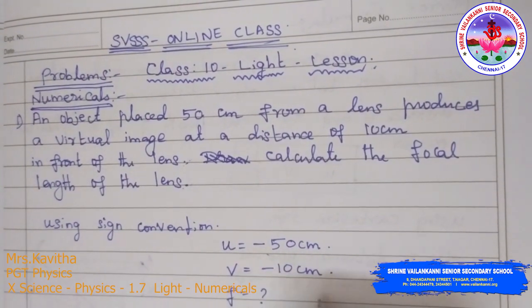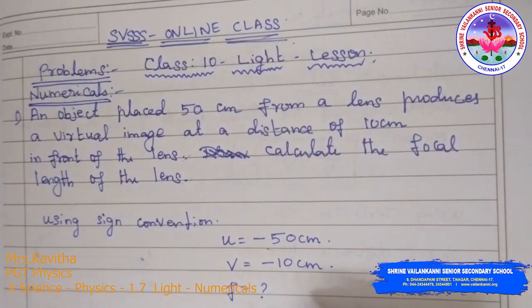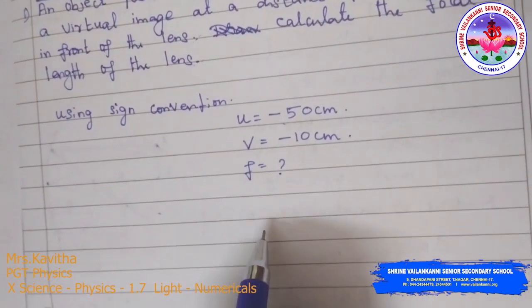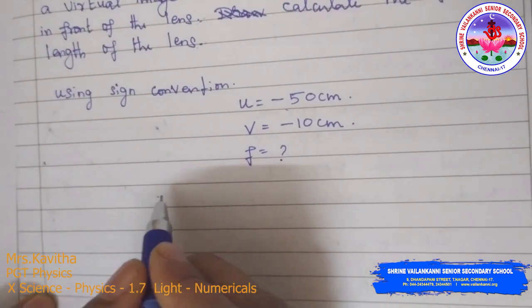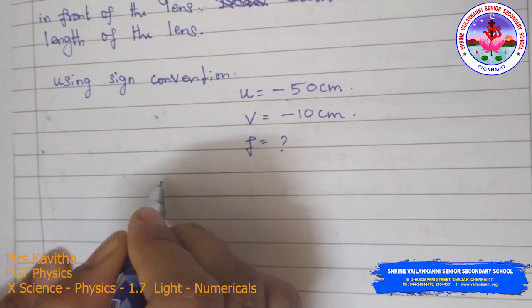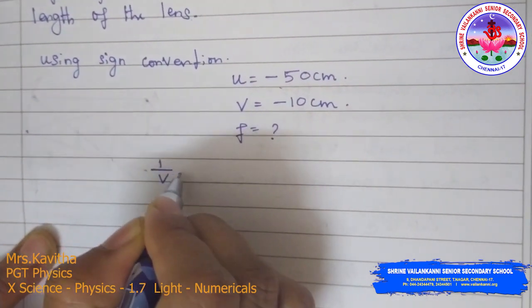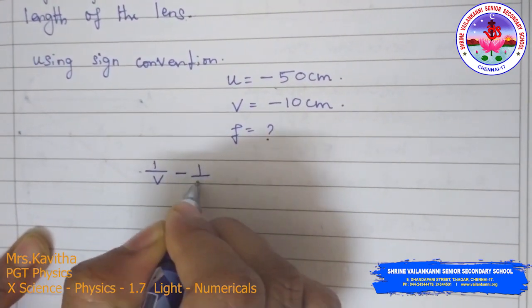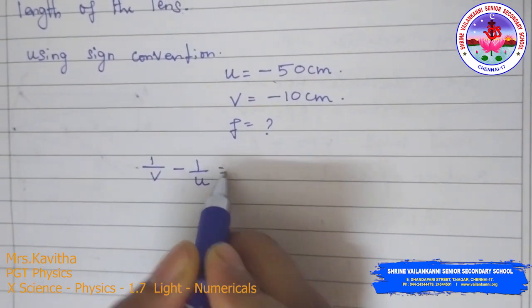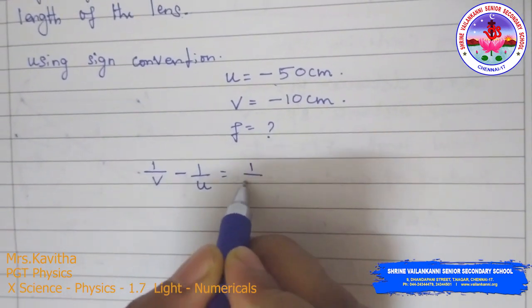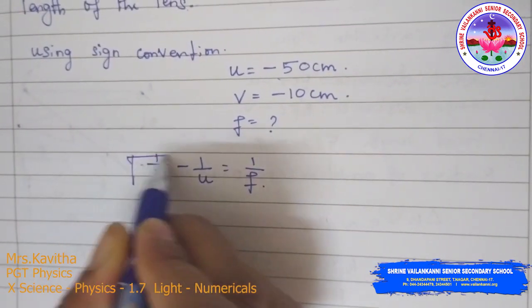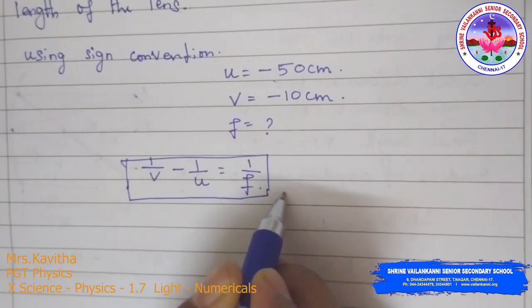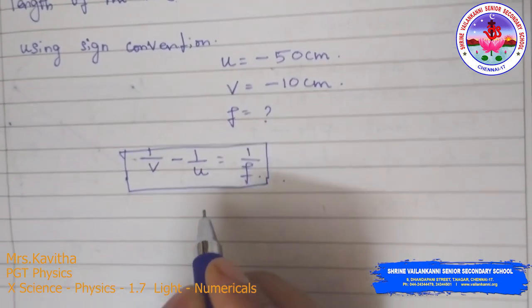Now F is what we have to calculate. What is the formula for a lens? The lens formula is: 1/V − 1/U = 1/F. You must write the formula.